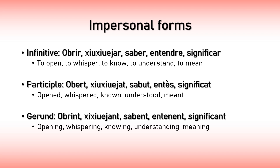And lastly there's the gerund. The gerund, just like in English, is the form used when the action is currently being performed. Examples: obrint (opening), xiuxiuejant (whispering), sabent (knowing), entenent (understanding), significant (meaning). Notice how I don't pronounce the T at the end of the gerund words — this is something specific to the Barcelona dialect, but some other dialects do pronounce the T.